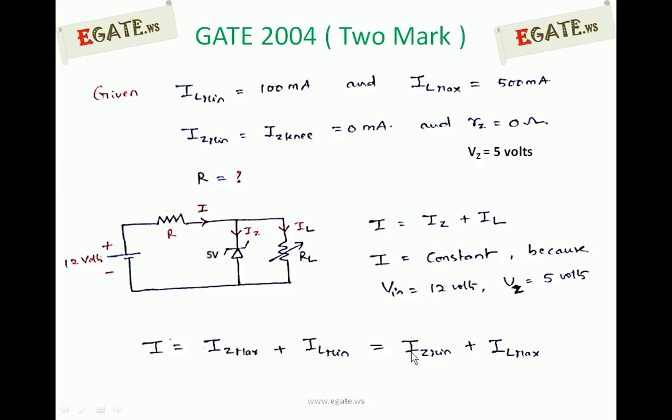We can write I in this second way: IZ minimum plus IL maximum. Out of these two equations we are going with this equation, IZ minimum plus IL maximum, where we know IZ minimum value is 0 mA and IL maximum value is 500 mA.